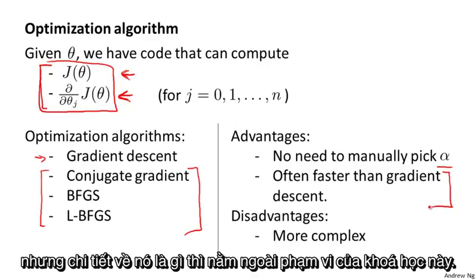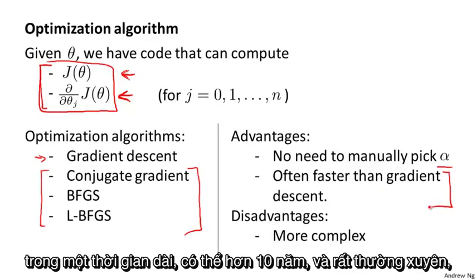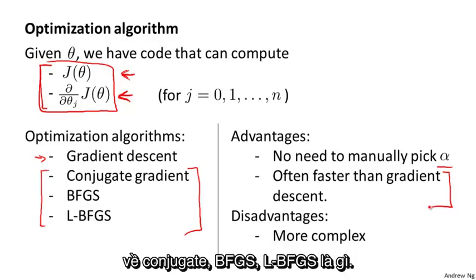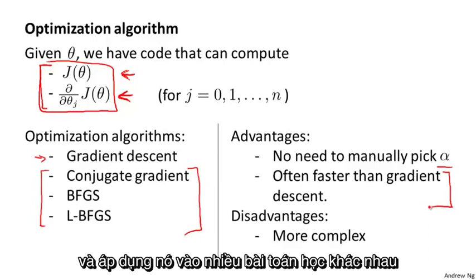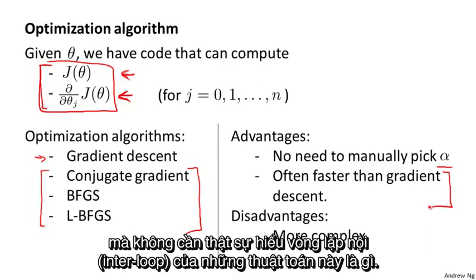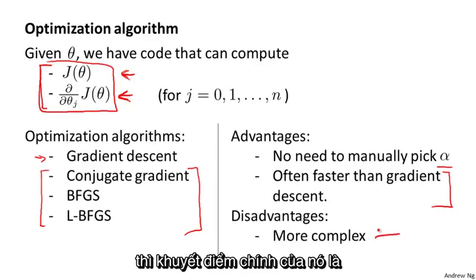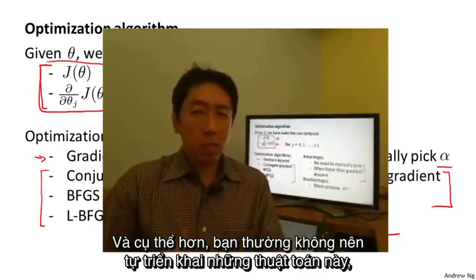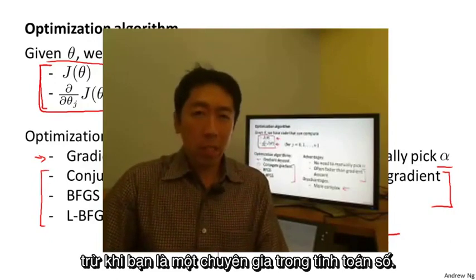But a detailed discussion of exactly what they do is beyond the scope of this course. In fact, I actually used these algorithms for a long time — maybe over a decade, quite frequently — and it was only a few years ago that I actually figured out for myself the details of what conjugate gradient, BFGS, and L-BFGS do. So it is entirely possible to use these algorithms successfully and apply them to lots of different learning problems without actually understanding the inner loop of what these algorithms do. If these algorithms have a disadvantage, the main disadvantage is that they're quite a lot more complex than gradient descent. In particular, you probably should not implement these algorithms — conjugate gradient, L-BFGS, BFGS — yourself, unless you're an expert in numerical computing.